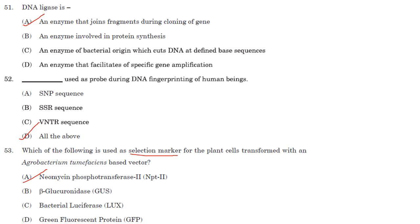Which of the following is used as a selection marker for plant cells transformed with an Agrobacterium tumefaciens-based vector? The answer is neomycin phosphotransferase — answer option A. GUS, LUX, and GFP are scorable or screening markers, not selection markers.